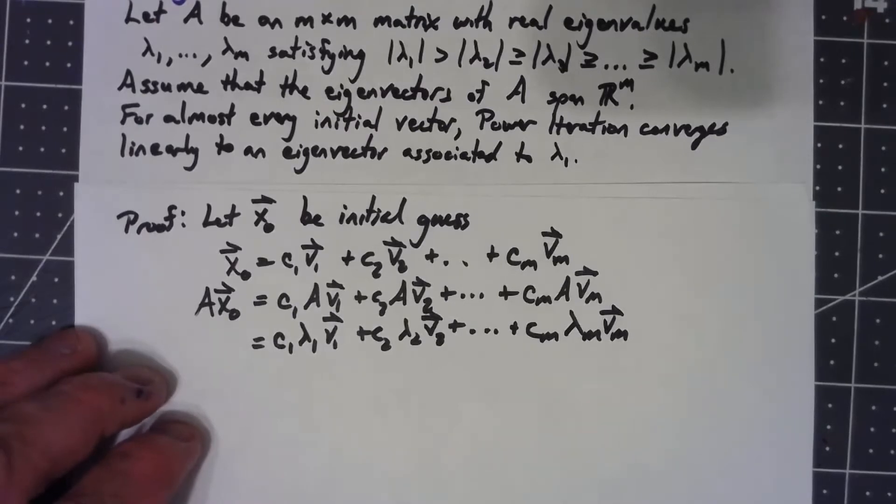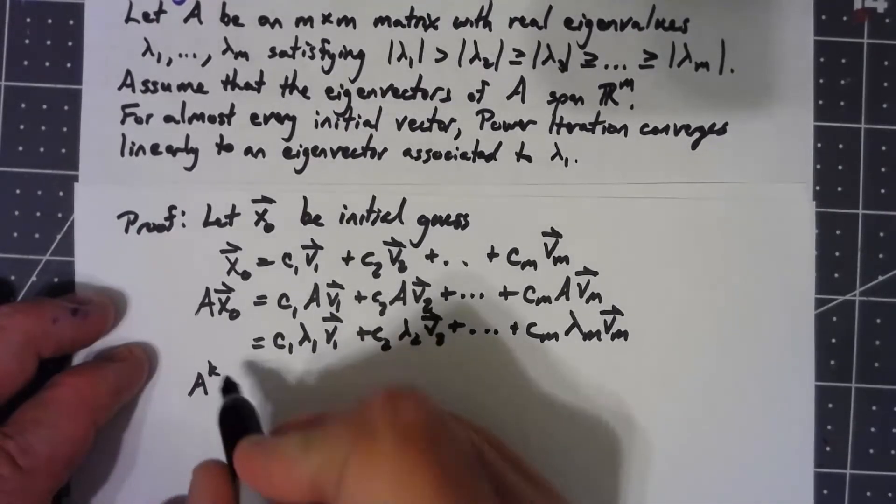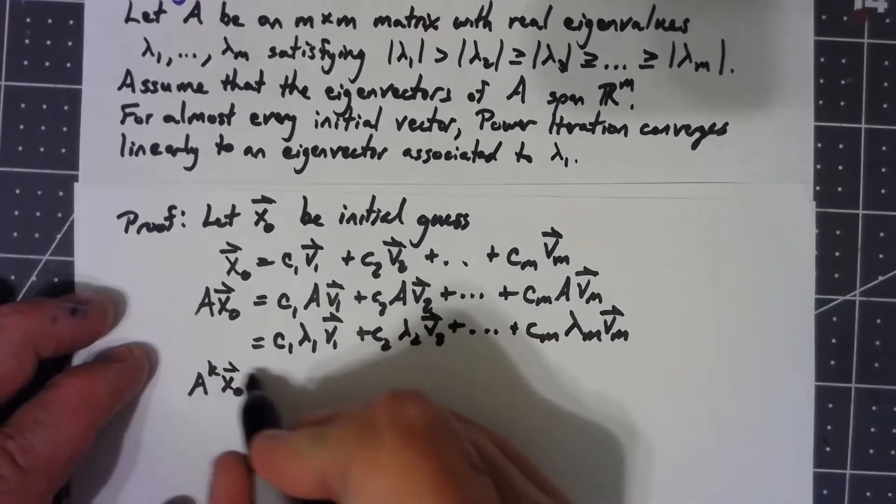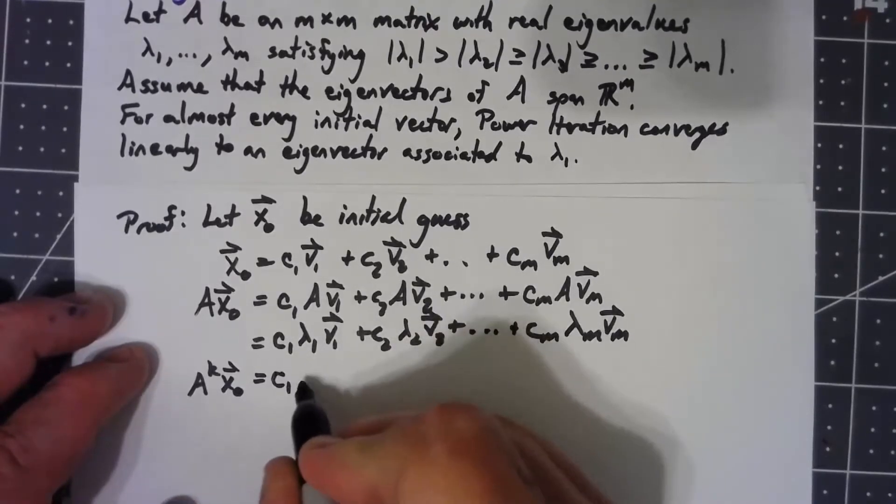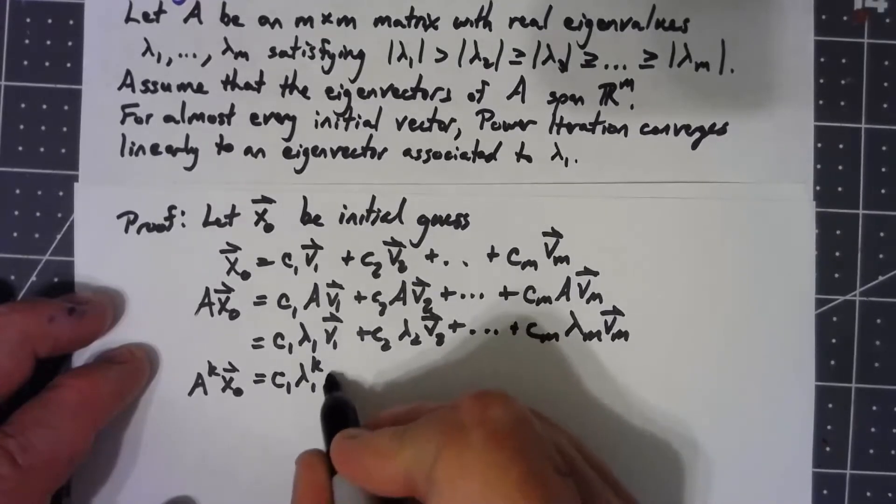We can see that if I take A^k x_0, the only thing that's going to happen is it raises each of those eigenvalues to the k power.